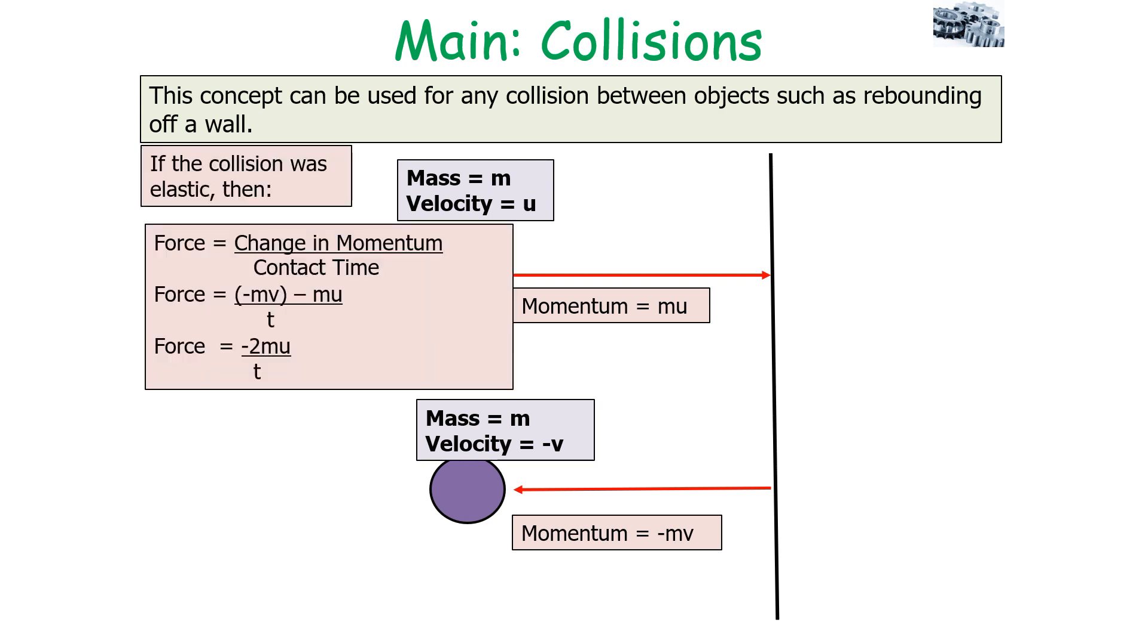So we can then simplify this a bit further, because if the collision was in fact elastic, that the momentum and the kinetic energy was conserved, this tells us that the values for v and u will be the same. So we can say that now minus mv minus mu over t is therefore equal to minus 2mu over t. And that's actually a fundamental equation which we come across when we're looking at gas pressure.